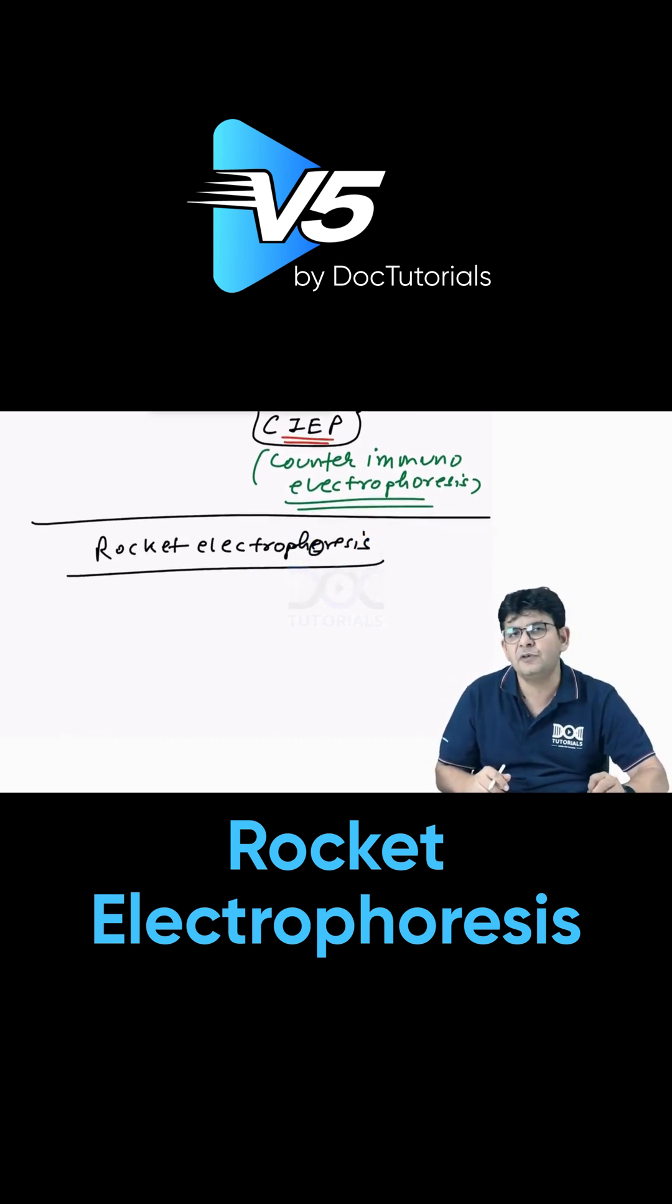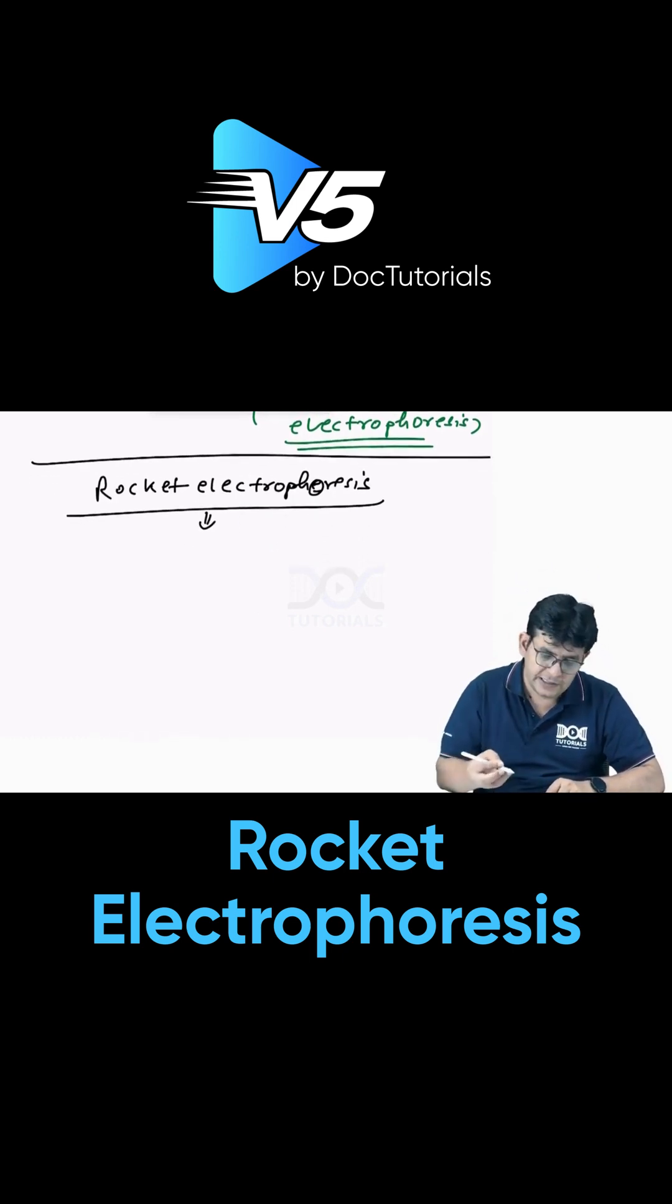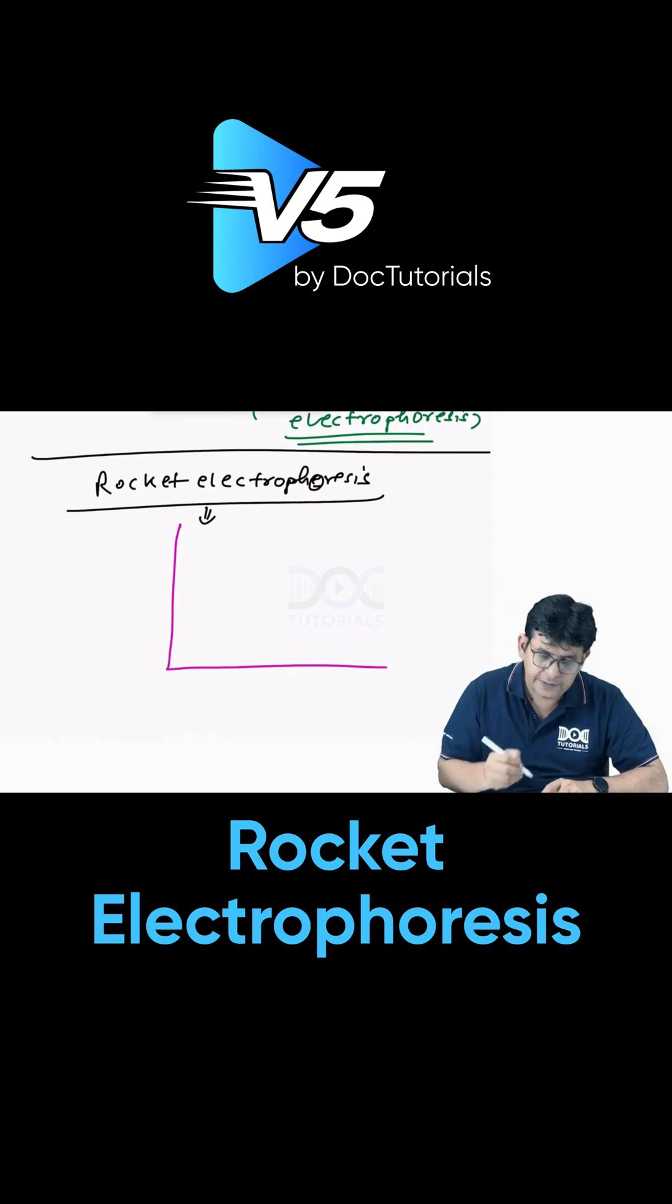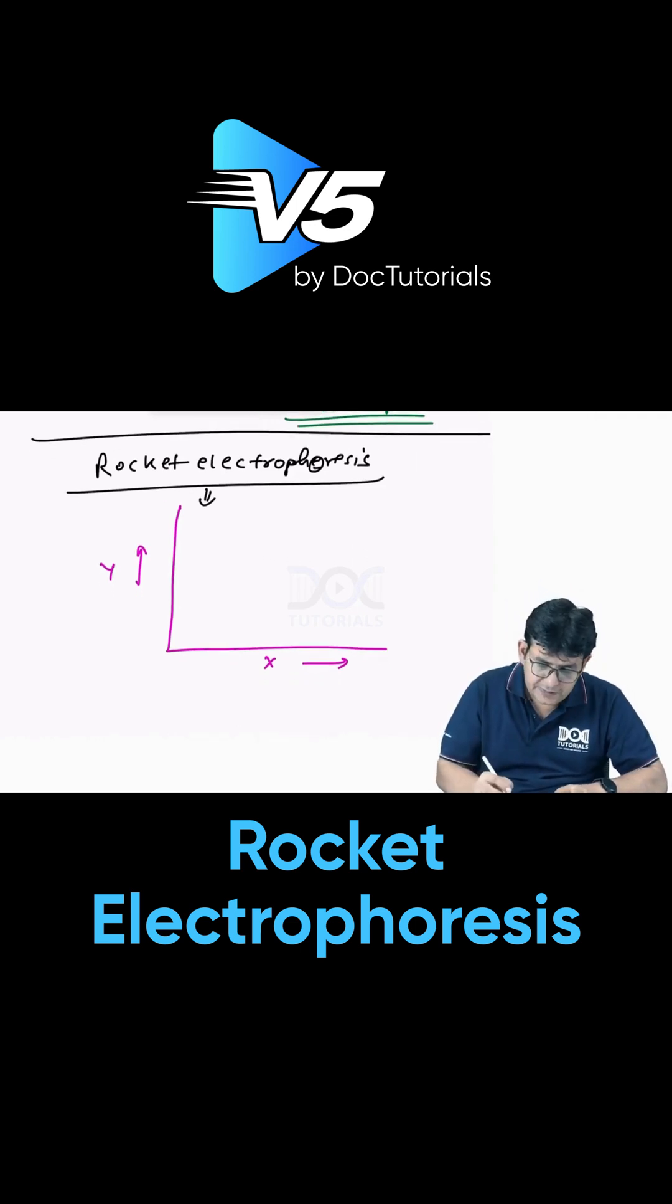For rocket electrophoresis, how we perform that: First of all, you see in this we take the graph structure with x-axis on this side and y-axis on this side.